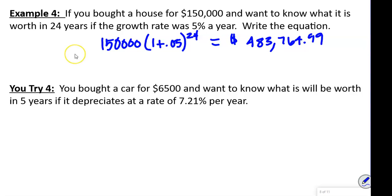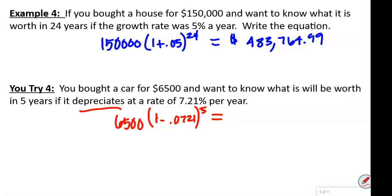Try the next one. This one involves depreciation, so we subtract: 6,500 times (1 minus 0.0721) to the 5th power. Remember to move the decimal two places to the left. The car value is going to be less than original, so the answer is $4,471.15.